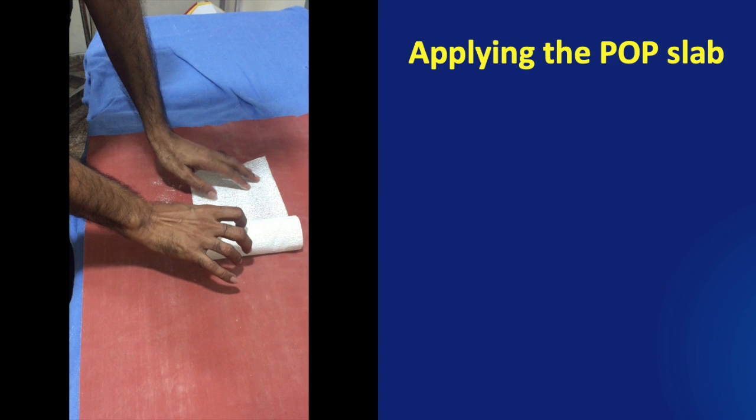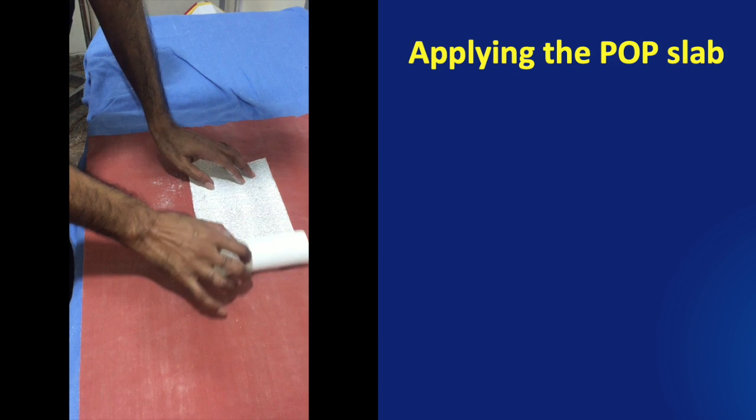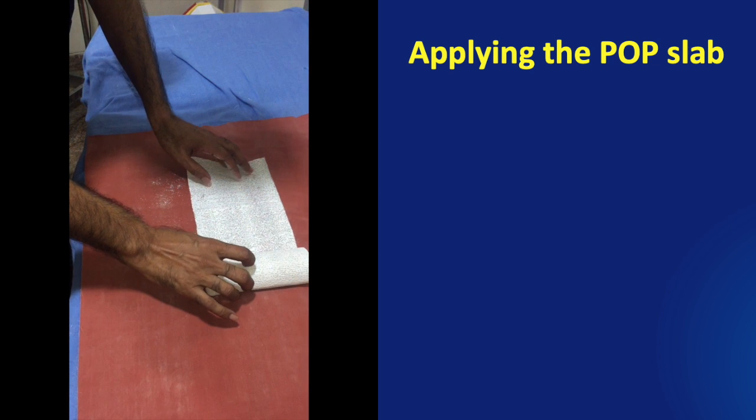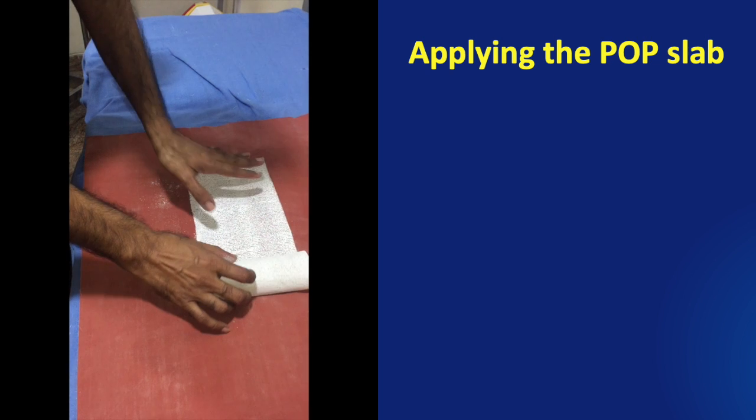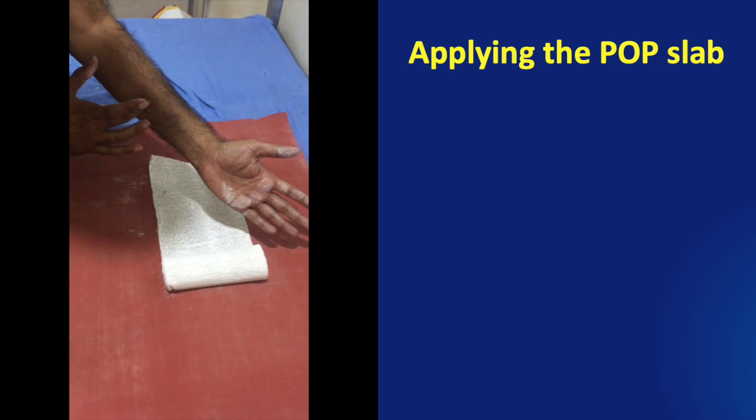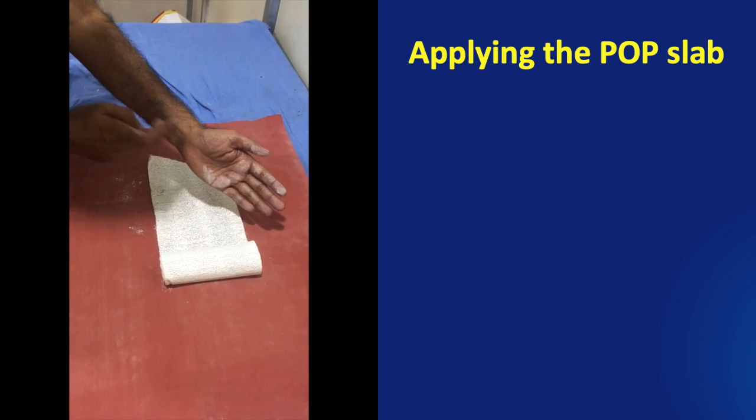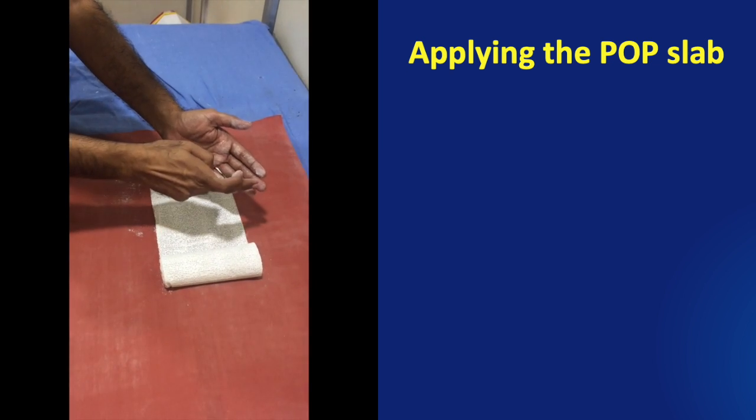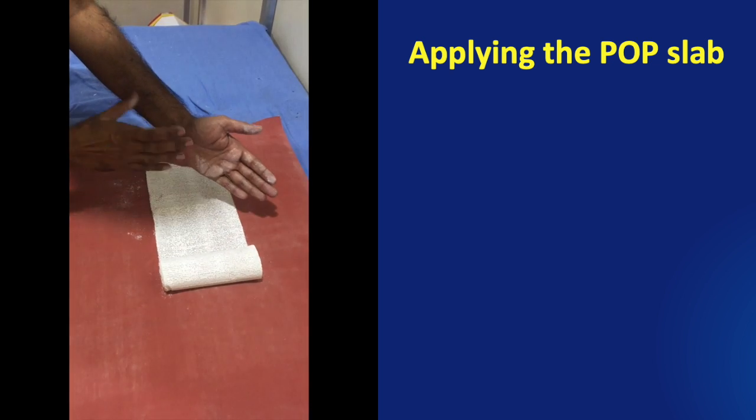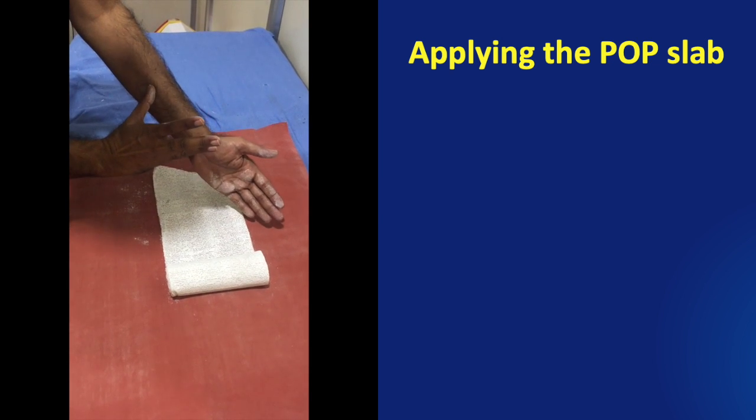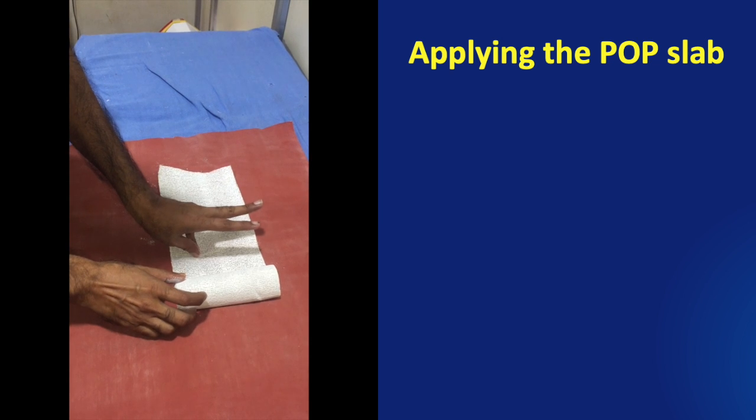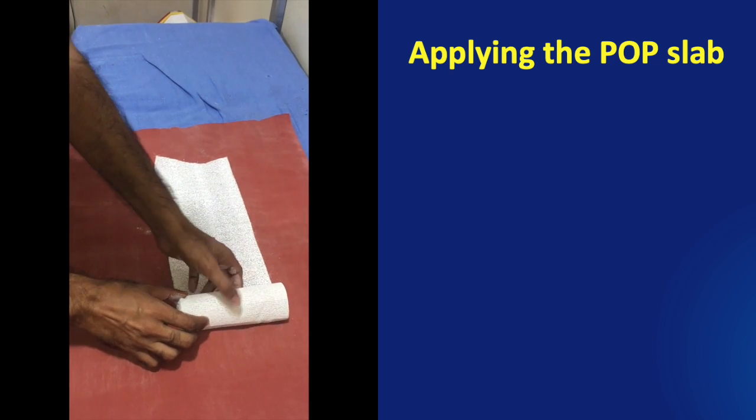Right, now we are all set to apply the POP slab. We need to now prepare the POP slab on a McIntosh sheet to prevent messing up the table. Roll out the required length. Usually this required length is measured in spans. One span is usually equal to the length of one palm of the person. But remember the patient's palm length will differ from the person who is applying the POP. The measurement should be taken from the patient's hand and the POP should be made out.